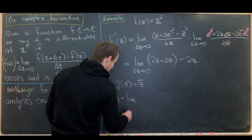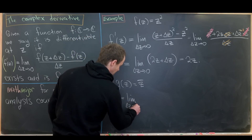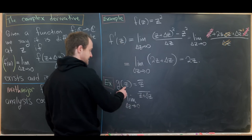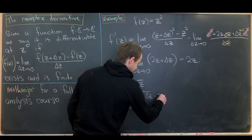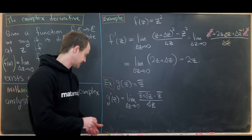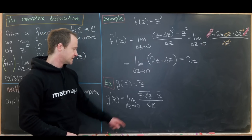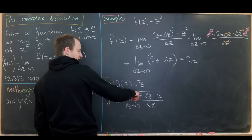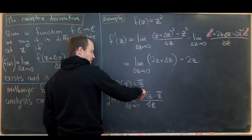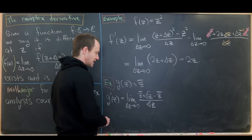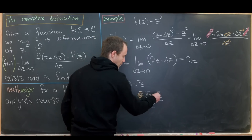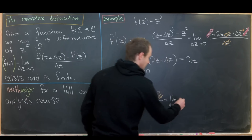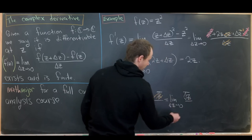This is the limit as delta z goes to zero of [conjugate(z + delta z) − z̄] / delta z. The complex conjugate is a linear function, so conjugate(z + delta z) = z̄ + conjugate(delta z). That lets us cancel the z̄ terms, leaving us with the limit as delta z approaches zero of delta z̄ / delta z.